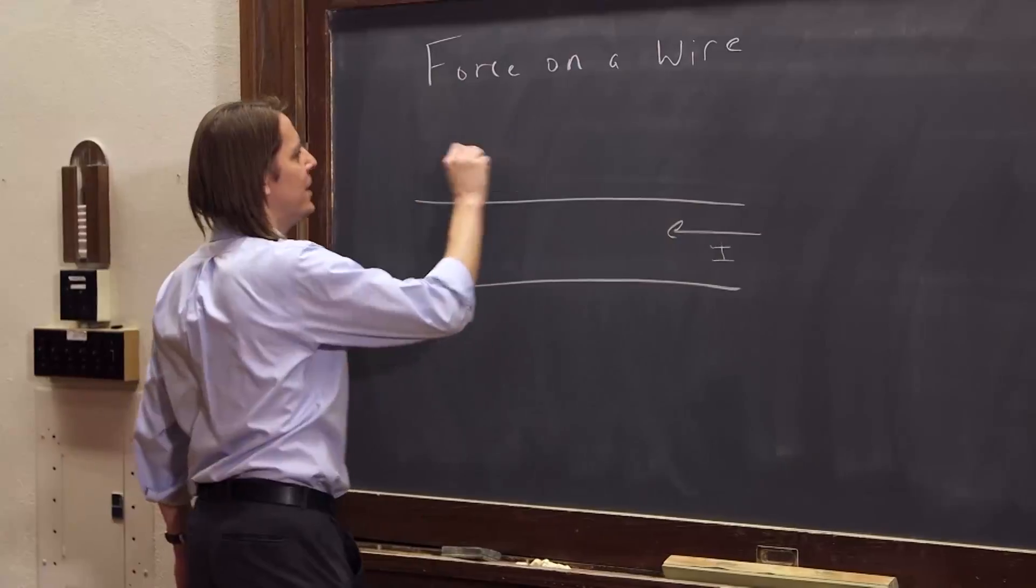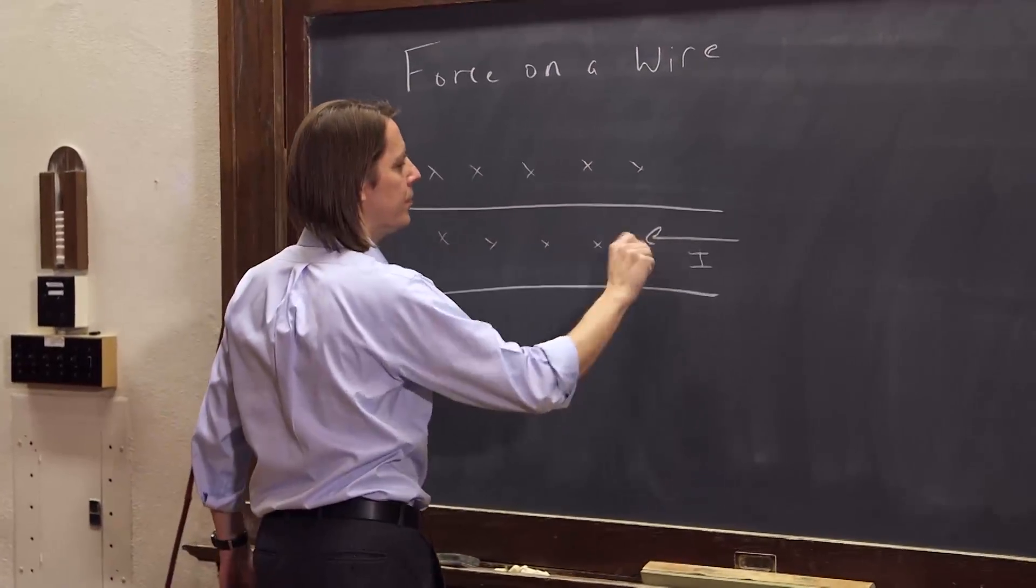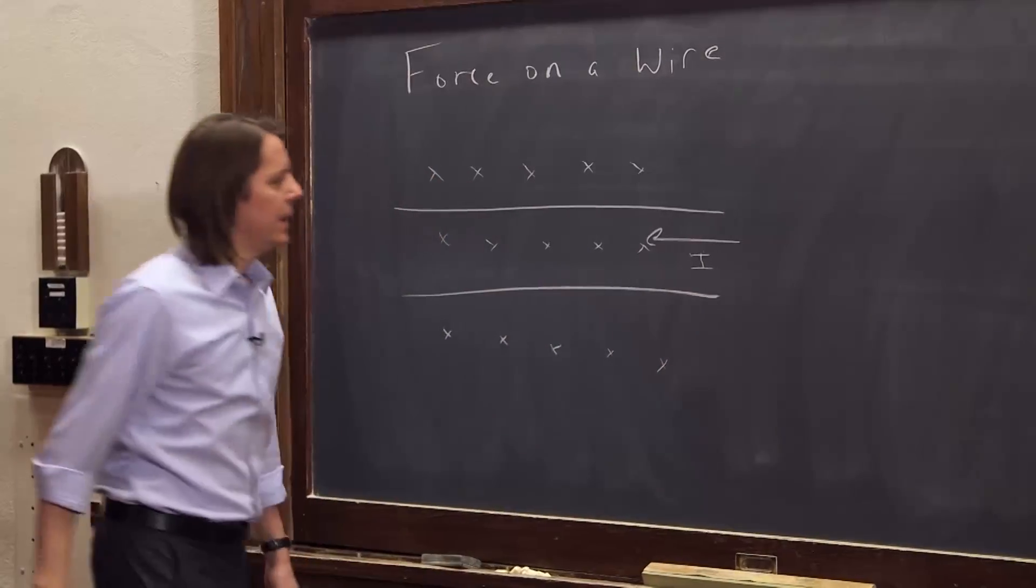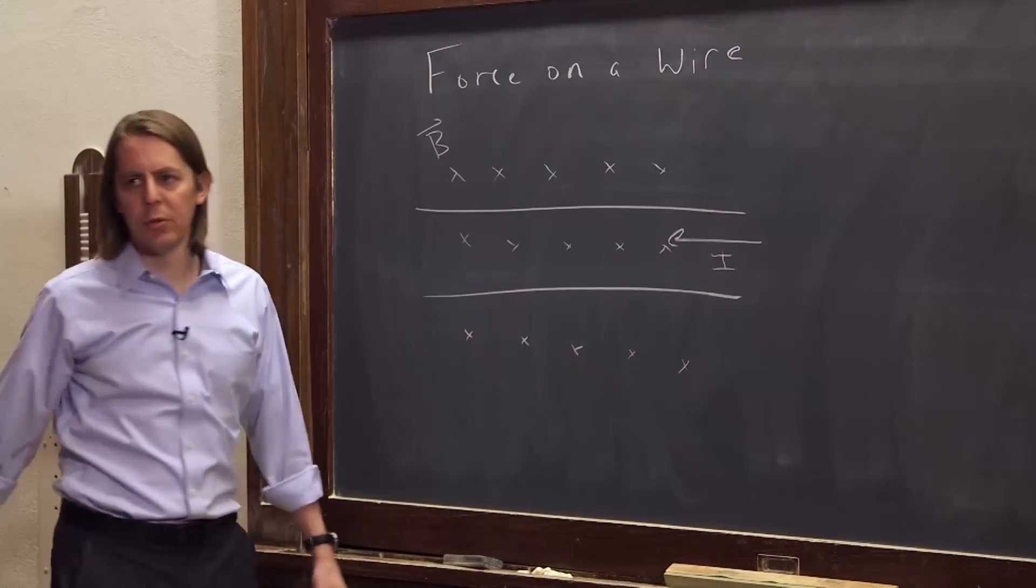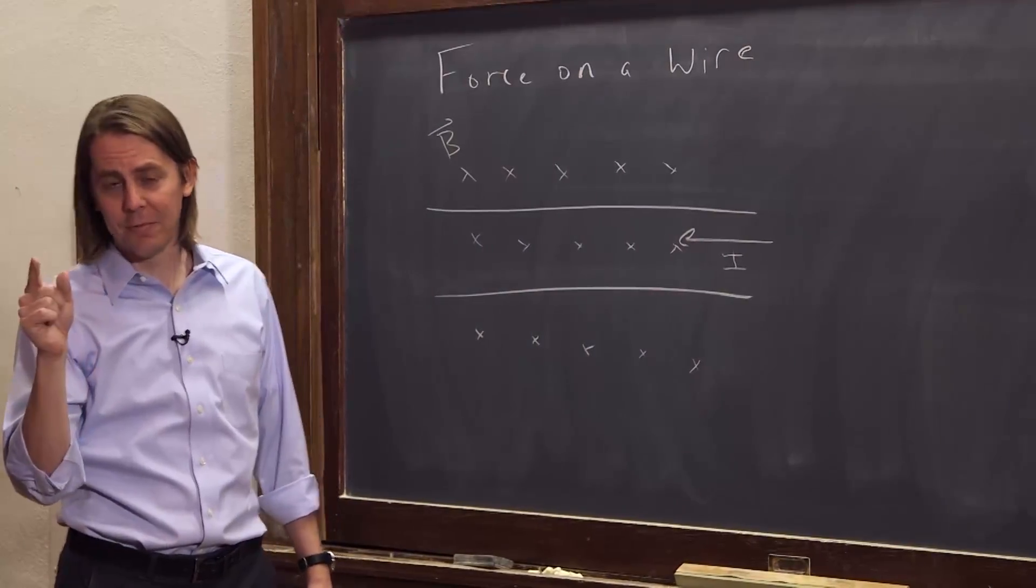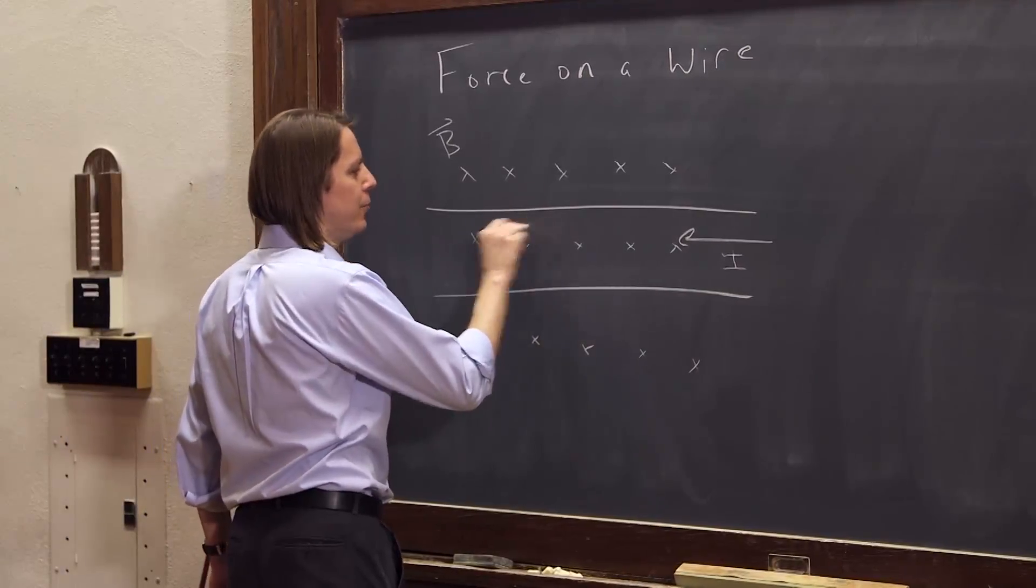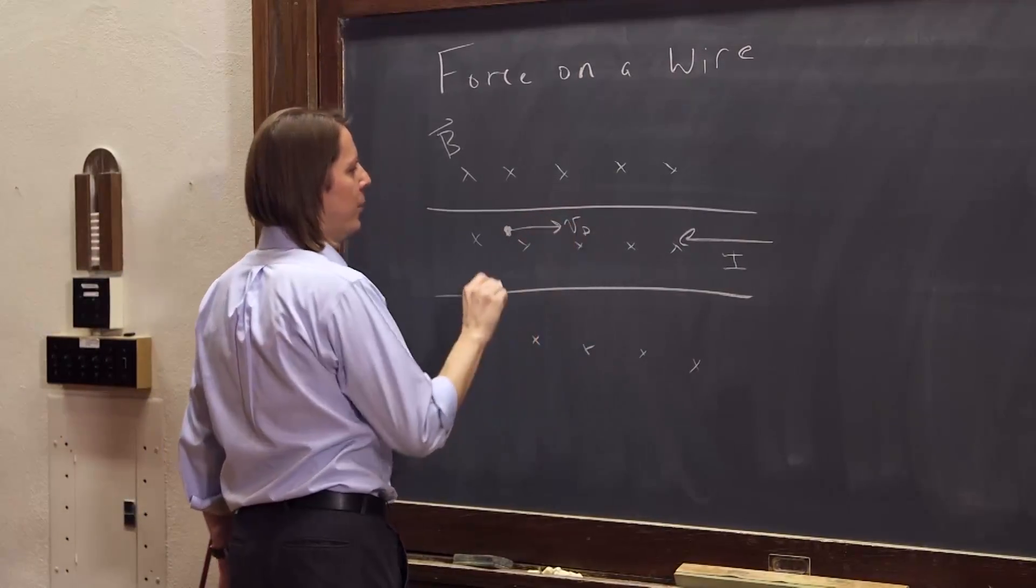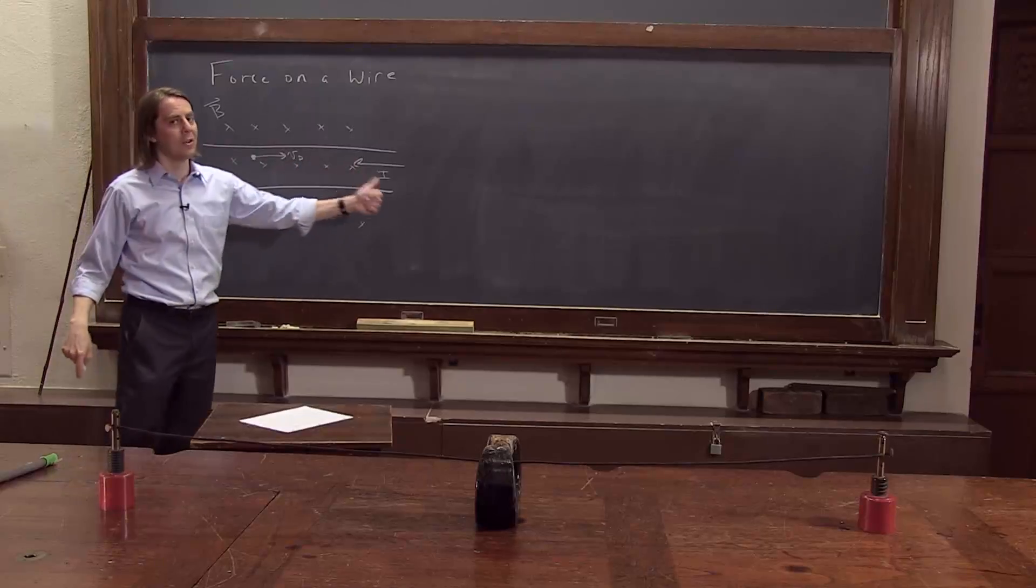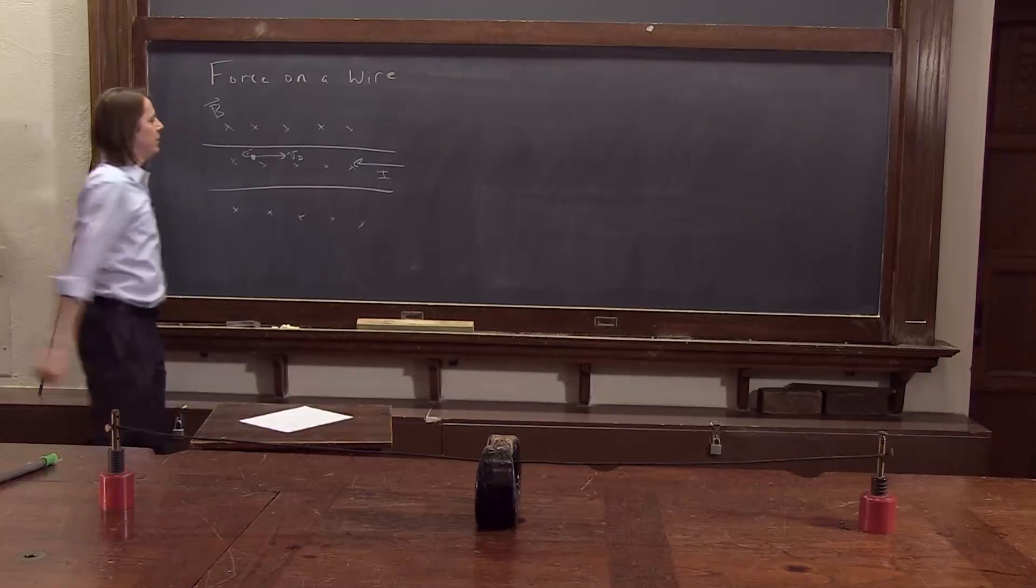And it's in a magnetic field, say, pointing into the board. And this time, we want to be real. We want to talk about the actual particle that's moving. It's the electron. And since the electron is a negative particle, it's drifting that way. Its drift velocity for a negative electron is against the current. Current is the flow of positive charge. So here is the electron.